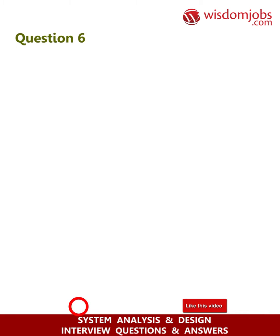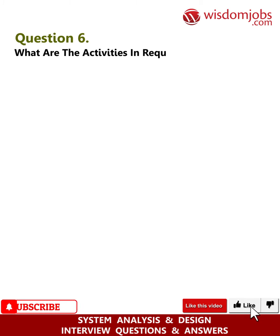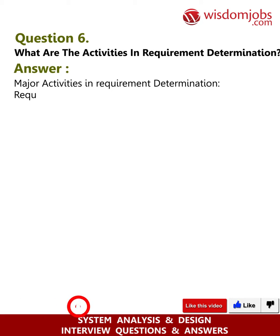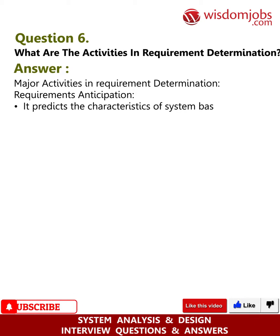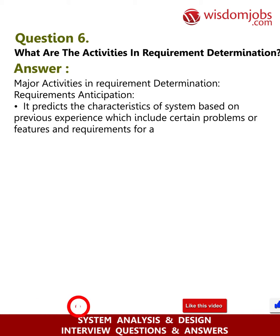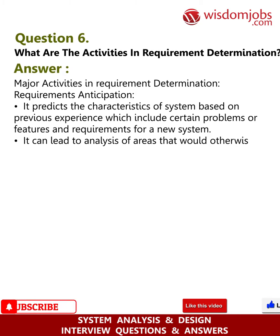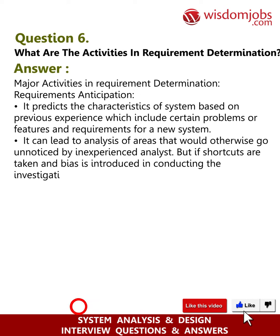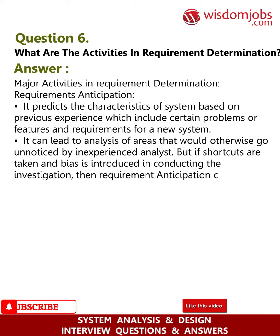Question 6: What are the activities in requirements determination? Answer: Major activities include requirements anticipation, which predicts the characteristics of a system based on previous experience, including certain problems or features and requirements for a new system. It can lead to analysis of areas that would otherwise go unnoticed by an experienced analyst, but if shortcuts are taken and bias is introduced in conducting the investigation, then requirements anticipation can be incomplete.